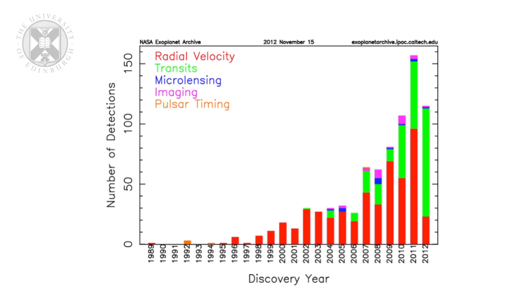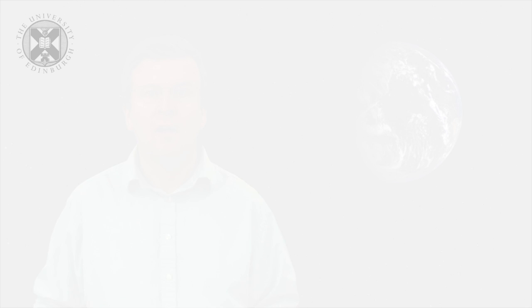We've already seen that a very large number of exoplanets have been discovered in recent years. This is a graph up to 2012 showing the number of planets and the different methods used to find them, the numbers discovered year by year. There's an increasing number of planets being discovered, and more recently Earth-like rocky terrestrial-type planets within the habitable zone of a star.